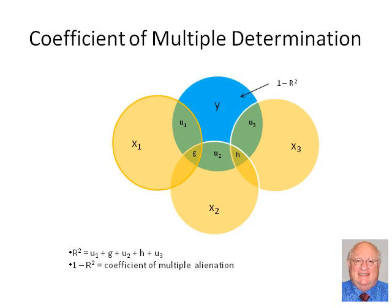In contrast, big R-squared equals the total overlap of the model with the criterion. It adds in all areas of overlap, the areas that are unique to individual predictors, here represented by u1, u2, and u3, and the areas that are redundantly predicted by the predictors, represented here by g and h. So, big R-squared is the proportion of total variance in y that is predicted by the model.